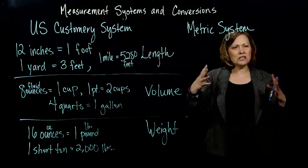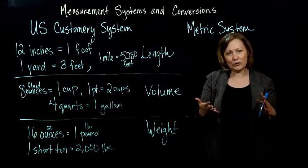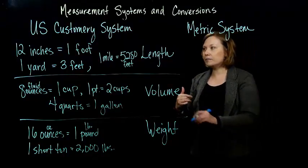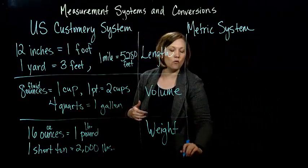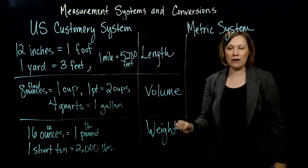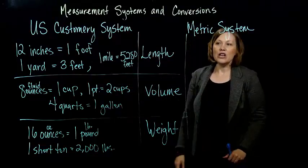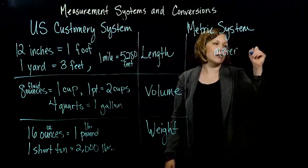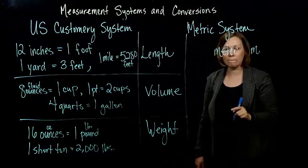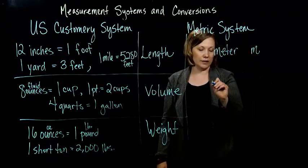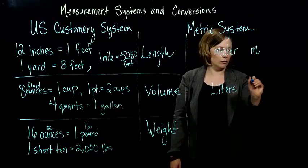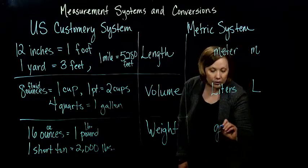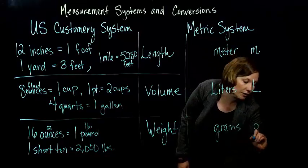The metric system, if you haven't encountered it or used it before, it's a little strange, it's a little different, but it's actually quite a bit simpler. Because in the metric system, you have one basic unit for length, volume, and weight. You don't have all these different ones going on. For length, in the metric system, we use meters. For volume, we use liters, and we use capital L to abbreviate that. And then, for weight, we use grams.